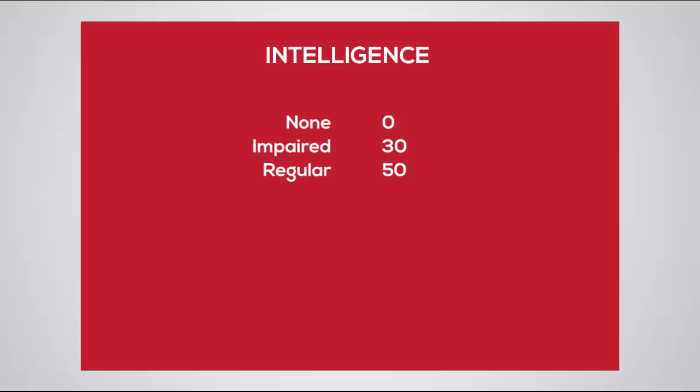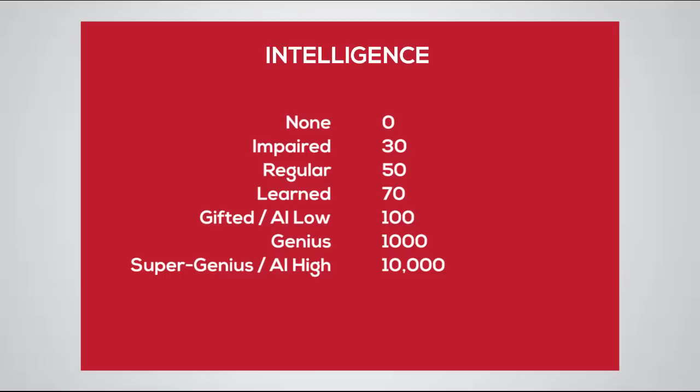For example, Intelligence has 8 power types and scores, and they are None, Impaired, Regular, Learned, Gifted, Genius, Supergenius, and Omniscient. So when evaluating this category, the lowest power is considered 0, and the highest level, Omniscient, is considered as 100,000.